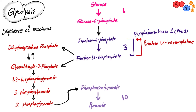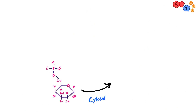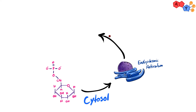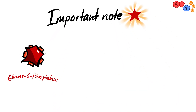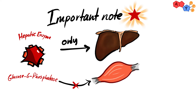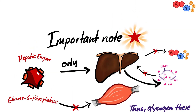Fructose-6-phosphate is then converted to glucose-6-phosphate by the reversible glycolytic reaction number two. The final roadblock is reaction one of glycolysis, where glucose-6-phosphatase replaces hexokinase. Glucose-6-phosphate is transported from the cytosol into the endoplasmic reticulum where it is hydrolyzed by glucose-6-phosphatase to form free glucose, which re-enters the cytosol and leaves the cell. Importantly, glucose-6-phosphatase is a hepatic enzyme found only in the liver. Its absence from skeletal muscle explains why muscle glycogen cannot serve as a source of blood glucose. Also note that glucose formed via gluconeogenesis in the liver cannot be used as an energy source by the liver itself.